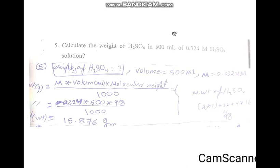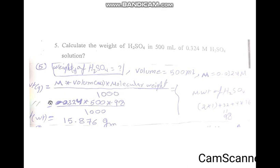Number 5: calculate the weight of H2SO4 in 500 ml of 0.00324 mol H2SO4 solution. The weight of H2SO4, the volume is 500 ml, and the molarity is 0.00324 mol. We will use the formula: weight equals mol multiplied by volume multiplied by molecular weight divided by 1000.